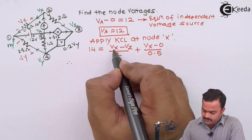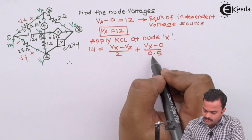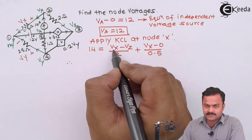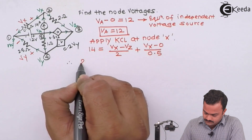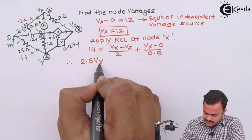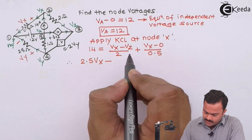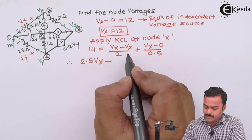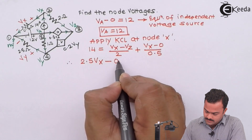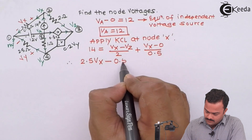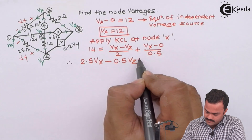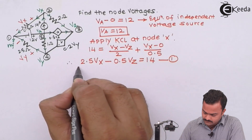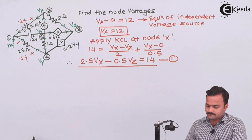Simplifying: Vx divided by 2 is 0.5 Vx, and 1 upon 0.5 is 2, so it becomes 2Vx. Combined, that gives 2.5 Vx. There is no Vy term present. The Vz coefficient is minus 1 by 2, which is minus 0.5 Vz. The constant on the right-hand side is 14. This is equation number 1.